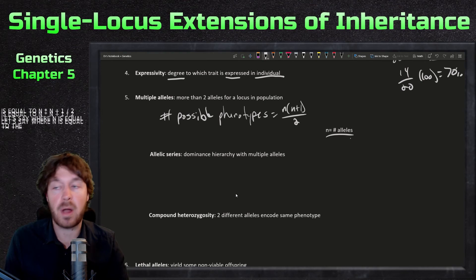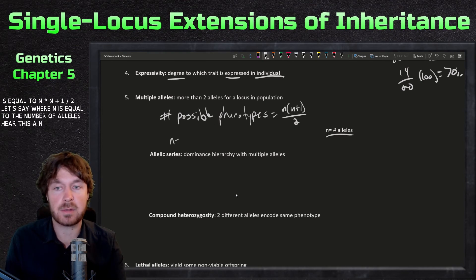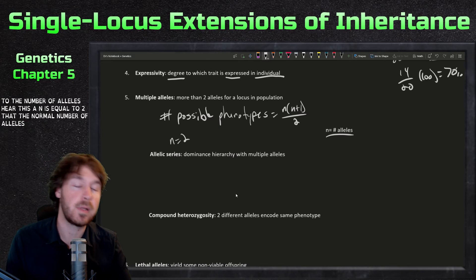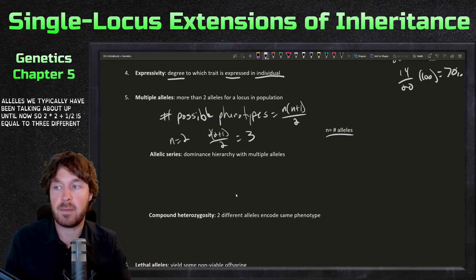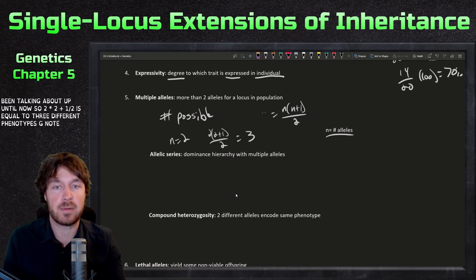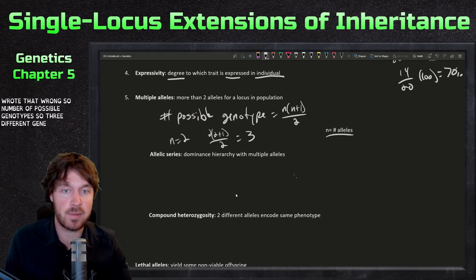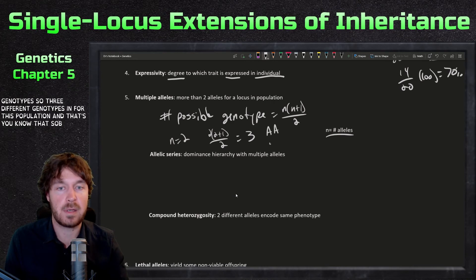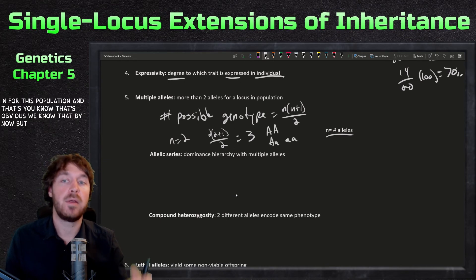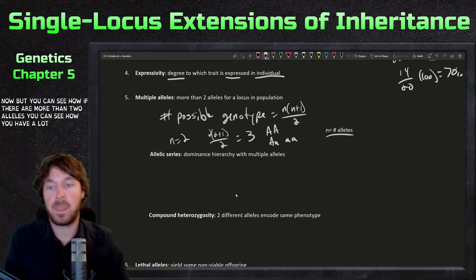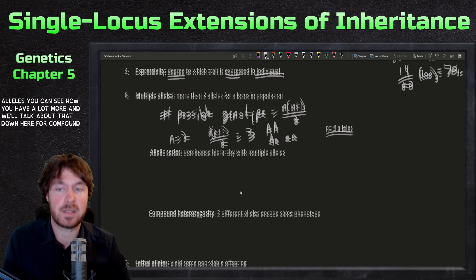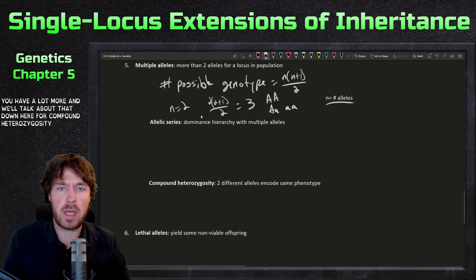You can calculate the number of possible genotypes with the formula: n times (n plus one) divided by two, where n equals the number of alleles. If n equals two — the normal case — you get 2 times 3 divided by 2, which equals 3 different genotypes. You can see how with more than two alleles you get many more possible genotypes. We'll talk about that with compound heterozygosity.